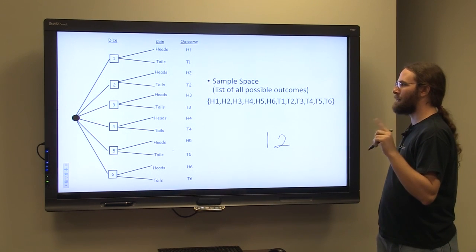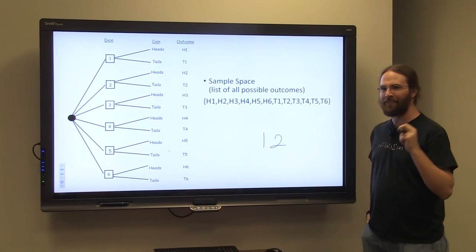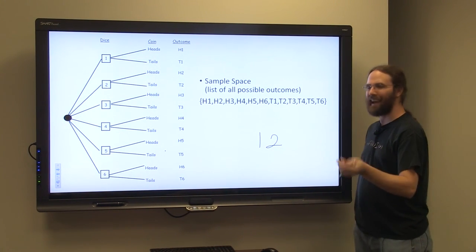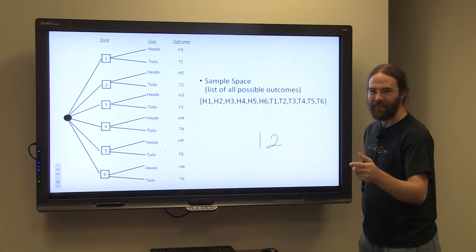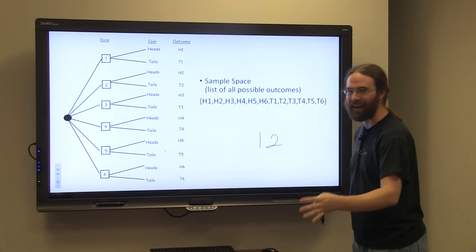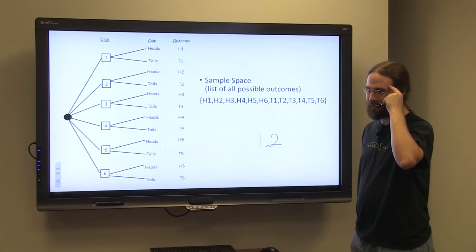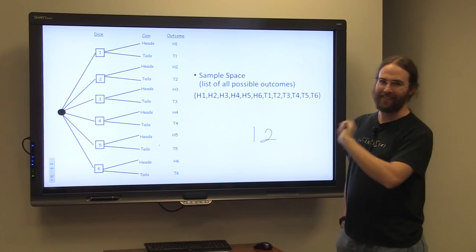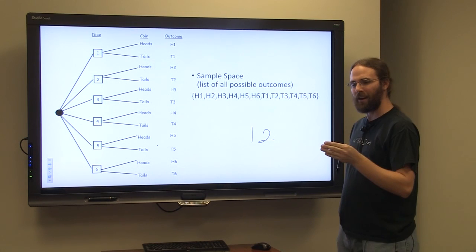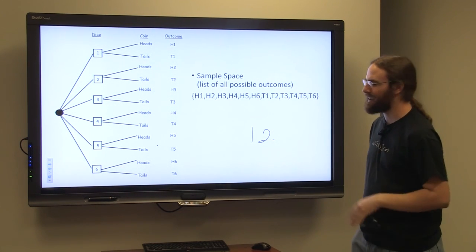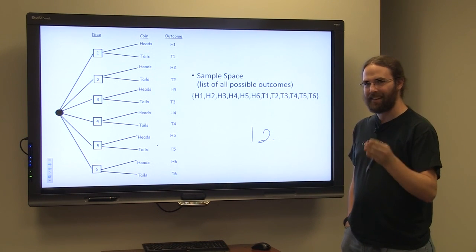So first, let's talk about: is this an independent event? When I flip a coin, does it care what happened with my die? Does the coin care that I just rolled a two or a three? When the coin is in the air, is it thinking, oh, I just saw a two pop up, I need to land on heads or tails? The coin does not care how the die performed. The die does not care how the coin performed. These are independent events.